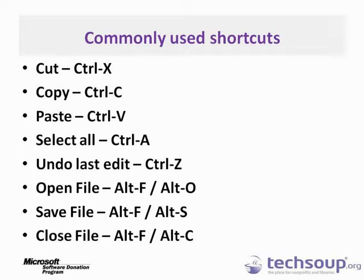Another very useful shortcut is Undo the last operation, which is Ctrl Z. Basic file shortcuts are Open, Save, and Close: Alt F then O, Alt F then S, and Alt F then C. You can see there is a pattern — they try to use letters that make sense. Alt F is for File, and then O, S, and C are for Open, Save, and Close. It doesn't always follow that convention, but it's pretty common to have helpful hints like that.